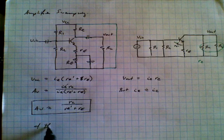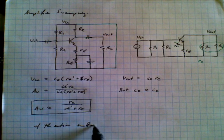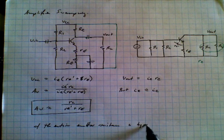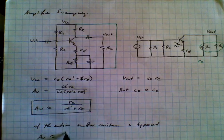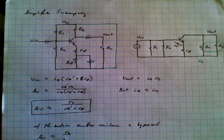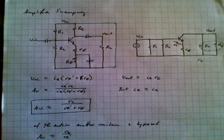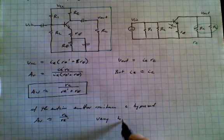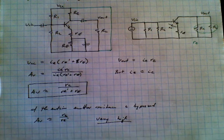If the entire emitter resistance is bypassed, then the gain becomes approximately equal to simply Rc over Re prime. Now this gain is very high, a very high gain. And that's because this Re prime is a very small resistance.